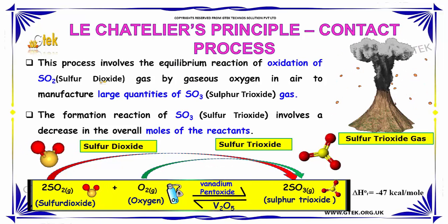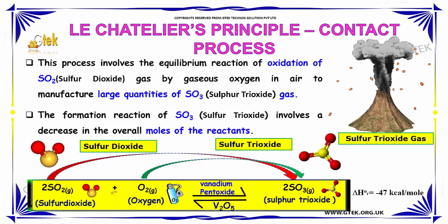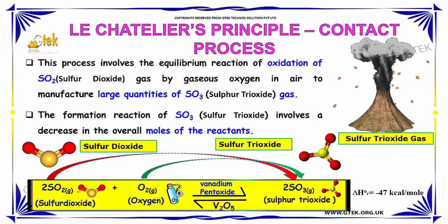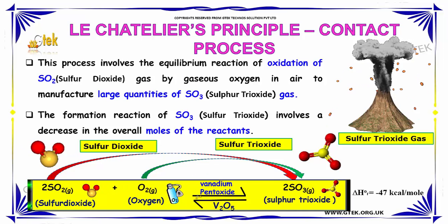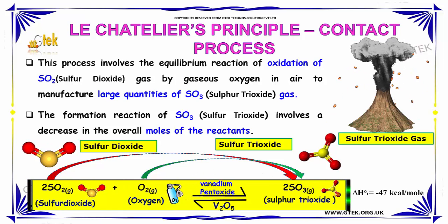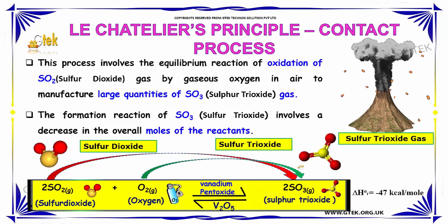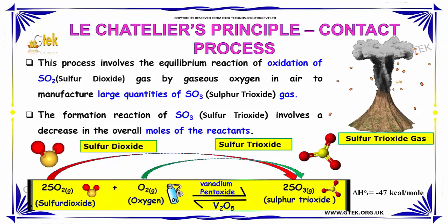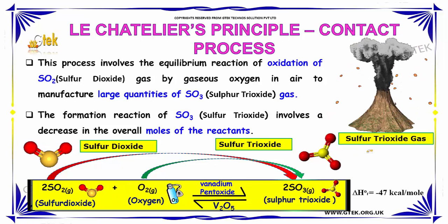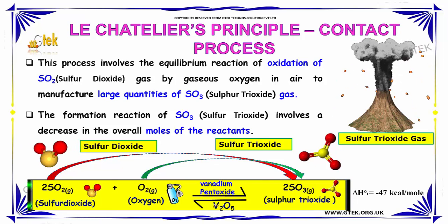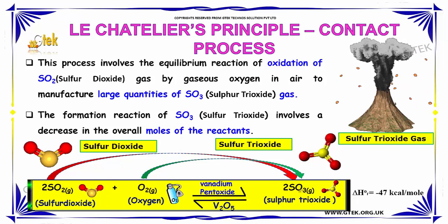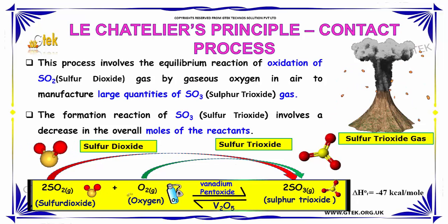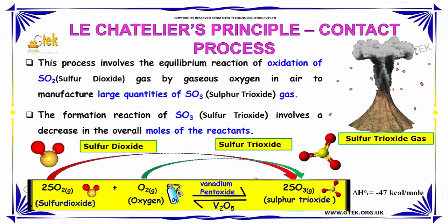The Contact Process involves the equilibrium reaction of oxidation of sulfur dioxide by gaseous oxygen in air to manufacture large quantities of sulfur trioxide gas. In the presence of vanadium pentoxide, the formation reaction of sulfur trioxide involves a decrease in the overall moles of the reactants.